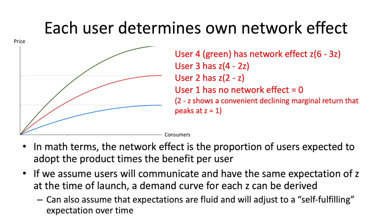User four has a network effect graph where at z equals zero — no one using it — they have an effect of zero. If 100% of the people are using it, this person gets an extra bump to their reserve price of three. User three would get a bump of two at 100% adoption. User two would get a one bump. User one, just at the very bottom of the graph, gets no network effect at all. I'm using a diminishing returns formula to get these nice results.